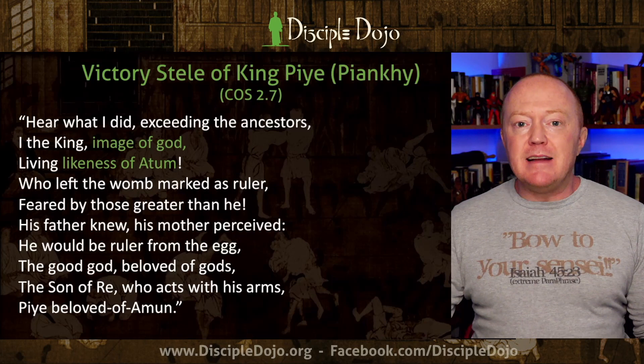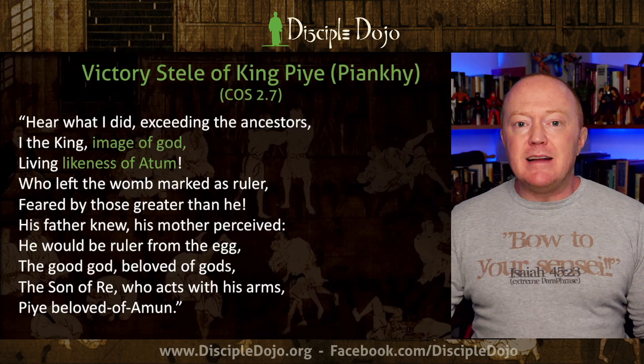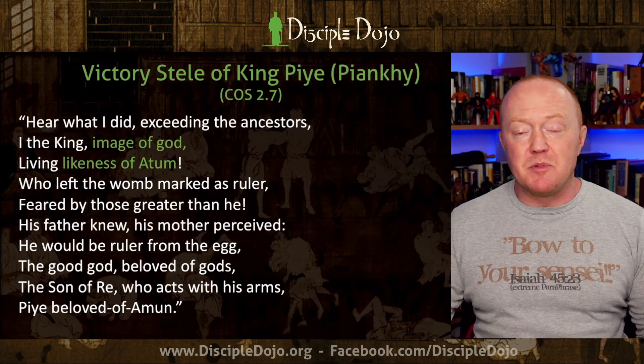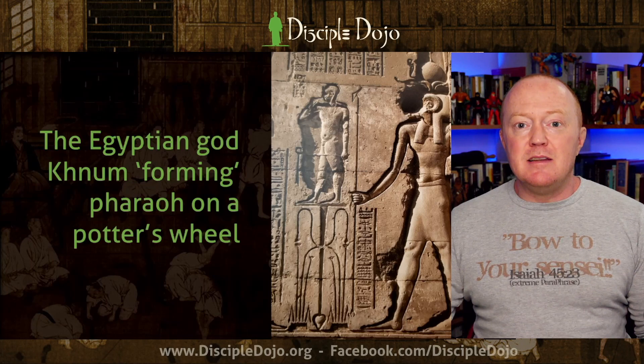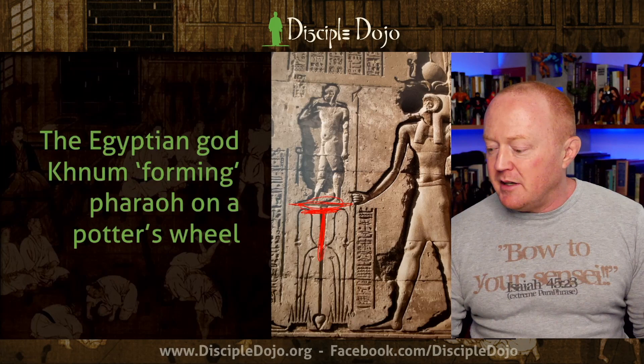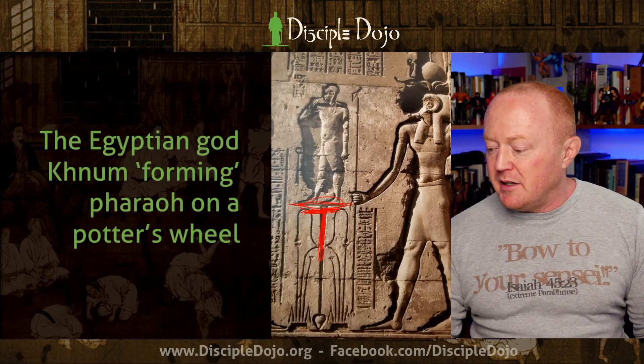Notice how King Piye describes himself as the image of God, the likeness of Atum. One resonance of the concept 'image of God' in the ancient world was the king, who claimed to be a direct descendant of whichever god was worshipped in their kingdom. In Egyptian theology, the pharaoh was divinely created. Here's an example of the god Khnum forming pharaoh on the potter's wheel. To be fashioned in the image of God meant literally being formed from clay. The image was seen as the divine heir and ruler.